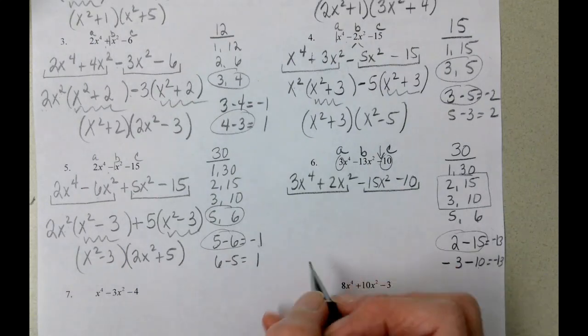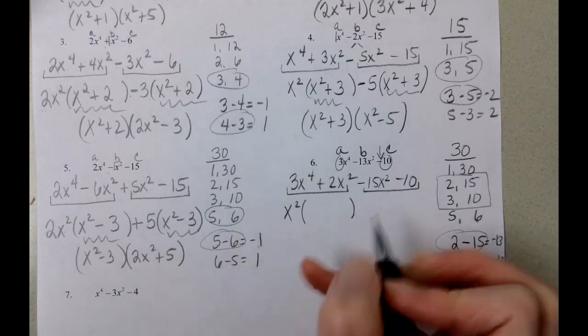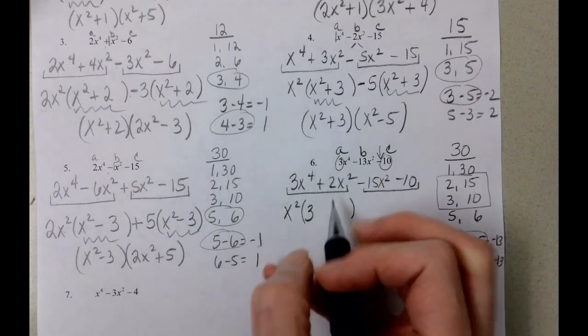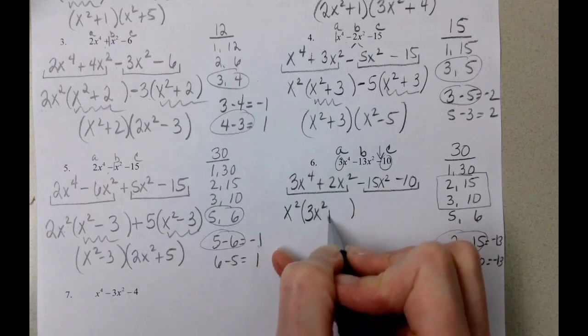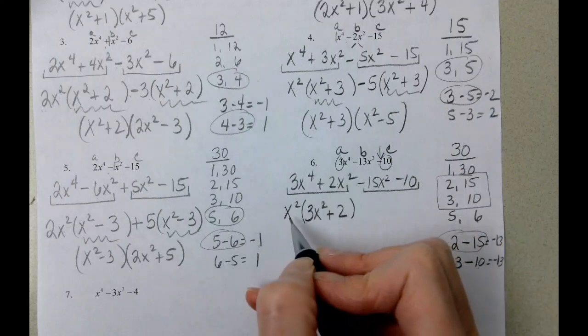Our greatest common factor is going to be the lowest exponent of x squared. We didn't do anything with the numbers. We had 4 x's, we took out 2, we still have 2. We didn't do anything with the numbers, but we had 2 x's, we took them out.